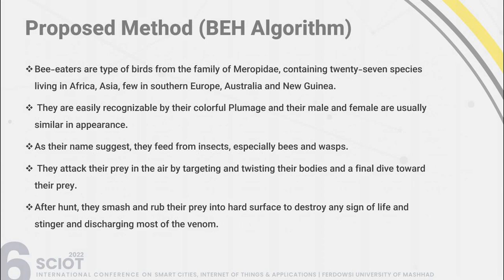Regarding the bee eater hunting strategy algorithm: bee eaters are a type of bird from the family Meropidae, containing 27 species living in Africa, Asia, and a few in southern Europe, Australia, and New Guinea. They are easily recognizable by their colorful plumage, and their male and female are usually similar in appearance. As their name suggests, they feed on insects, especially bees and wasps. They attack their prey in the air by targeting and twisting their body, then make a final dive toward their prey. After the hunt, they smash and rub their prey into hard surfaces to destroy any sign of life and stinger, discharging most of the venom.